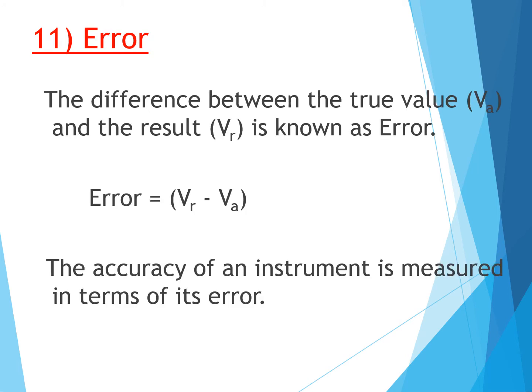The difference between the true value and the result is known as error: Error = VR − VA. The accuracy of an instrument is measured in terms of its error — if the error is minimum, accuracy is higher. For example, a clock that gains one minute after ten days has less error and more accuracy than a clock that gains ten minutes after one day.